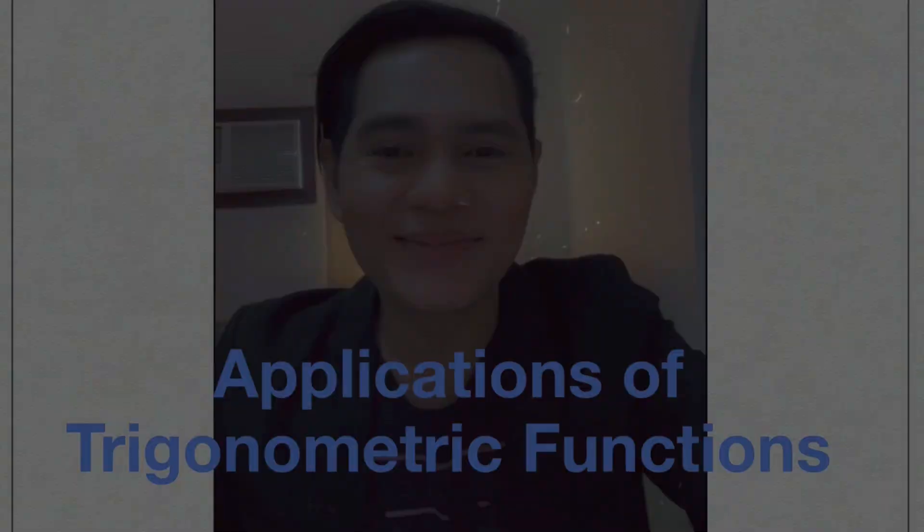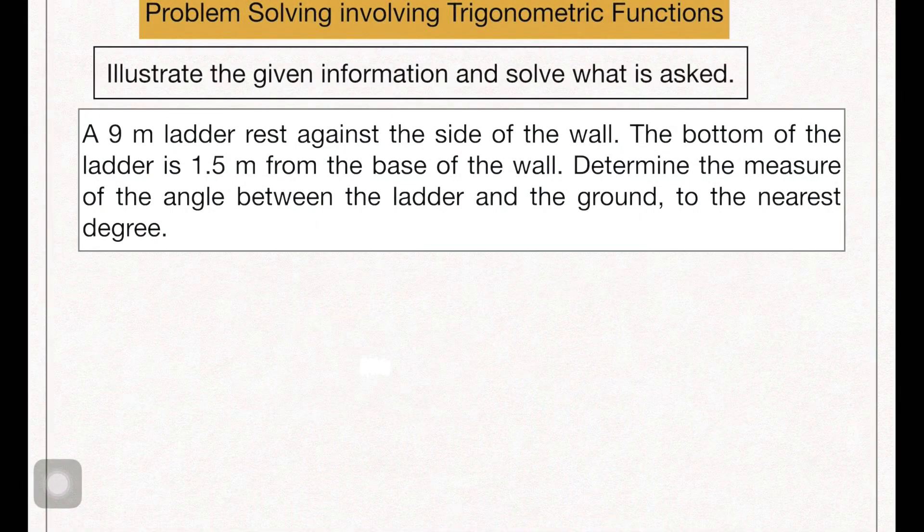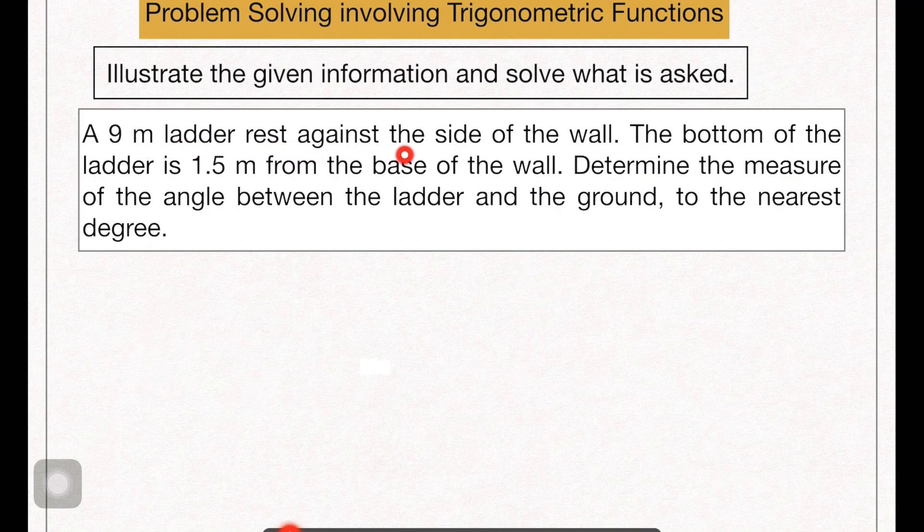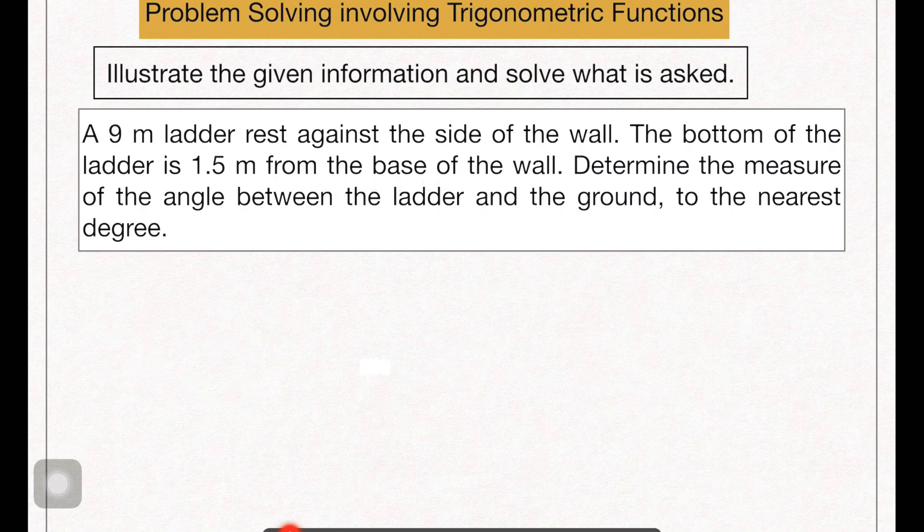Here we go. I have here an example of a problem solving involving trigonometric functions wherein we are going to illustrate the given information and solve what is asked. So here's the problem: a nine meter ladder rests against the side of the wall, the bottom of the ladder is 1.5 meters from the base of the wall. Determine the measure of the angle between the ladder and the ground to the nearest degree.